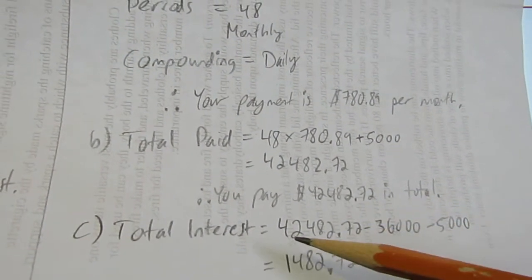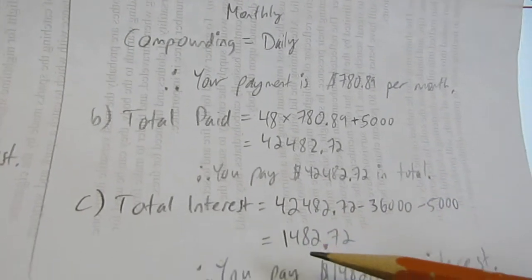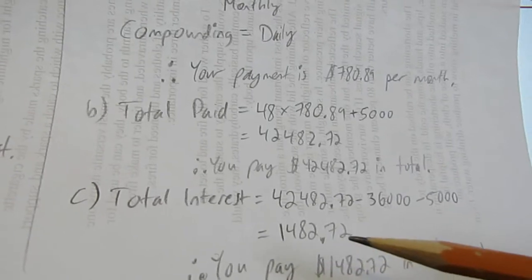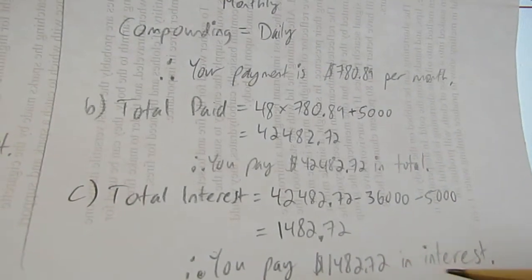So your total interest is total paid, minus loan, minus down payment, which in this case, final answer, with a dollar sign, therefore statement, you paid $1,482.72 in interest.